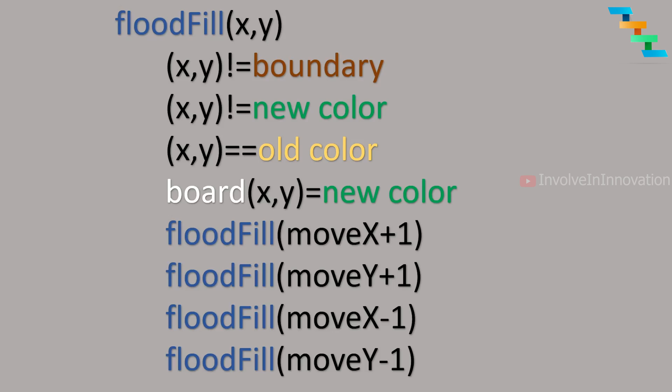Then we change the color of the pixel to the new color. Then we recursively call the flood fill algorithm four times: moving the x axis down one step, moving the y axis one step towards the right, moving the x axis one step backwards towards the top, and moving the y axis one step towards the left. Once this function terminates, the old color will be replaced with the new color.